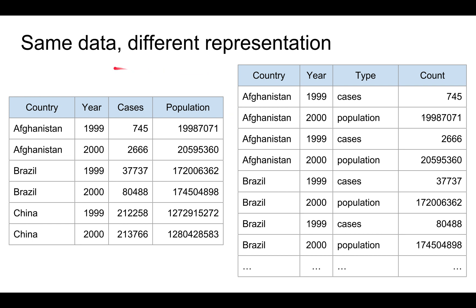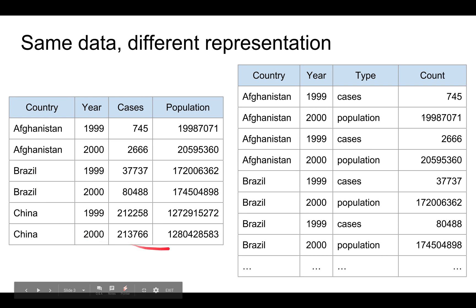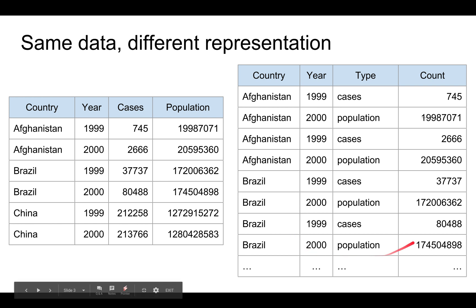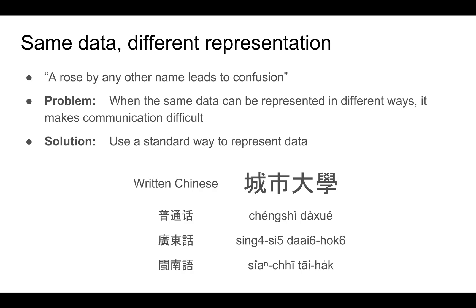The same data can actually be represented in multiple different ways. For example, if you look at this data table on the left, another person might represent that data in the format shown on the right. And actually there are other possible formats as well, which you'll see later. When the same thing can be represented in different ways, that leads to confusion, and this makes communication difficult or prone to errors.